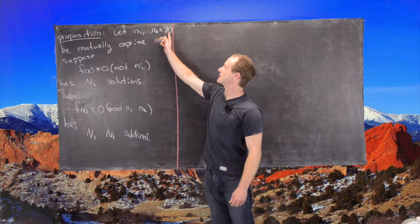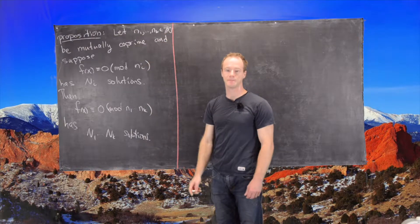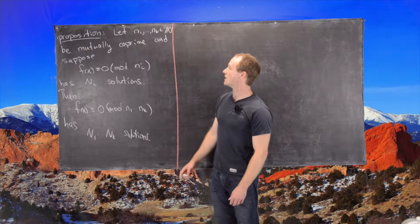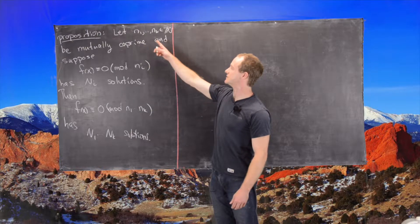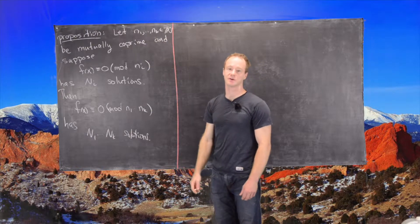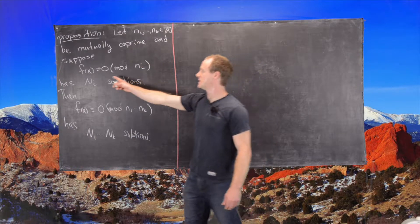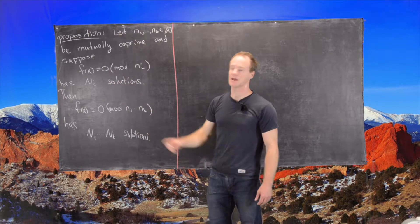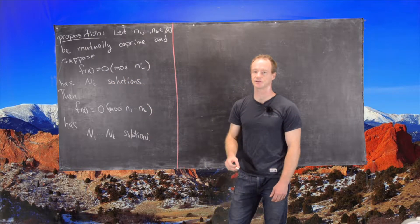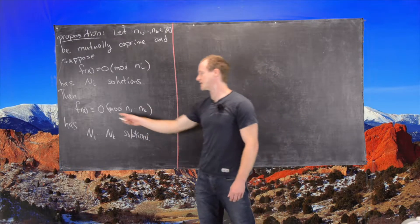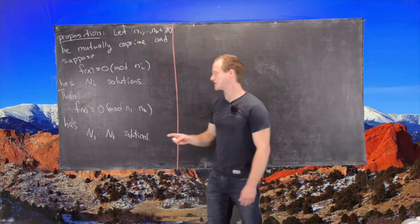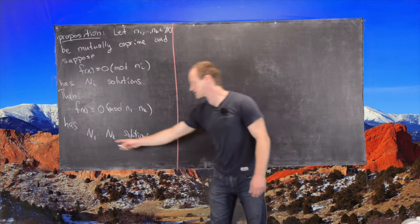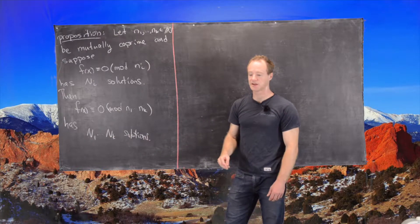Let N1 through NK be natural numbers that are mutually co-prime — meaning the GCD of any two of them is one. Suppose that the polynomial congruence f(x) ≡ 0 mod n_i has capital N_i solutions. Then the conclusion is that f(x) ≡ 0 mod the product N1 through NK has the product N1 through NK solutions.